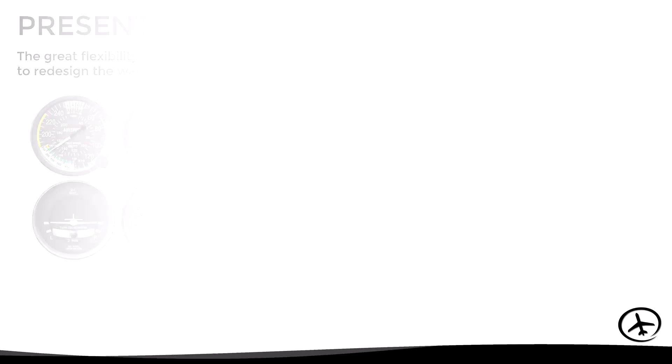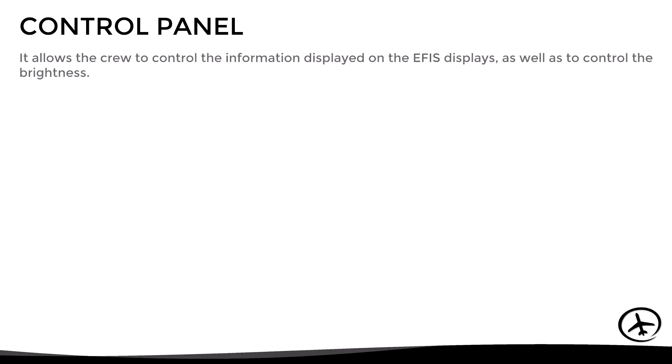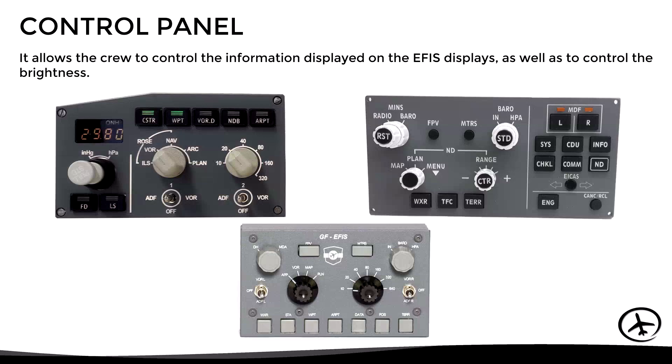Let's now look at the control panel. This unit allows the crew to control the information displayed on the EFIS displays, as well as to control the brightness. As previously mentioned, the design and functionalities of this control panel vary depending on the manufacturer and model, so it is important to be familiar with the control panel to be operated.